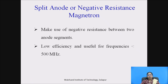Split anode or negative resistance magnetron: this magnetron makes use of negative resistance between two anode segments. It has low efficiency and is useful for frequencies which are less than 500 MHz.